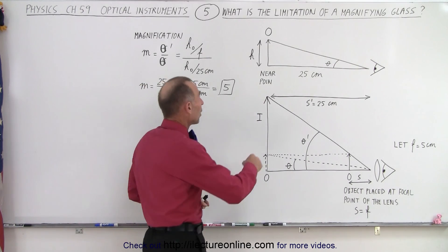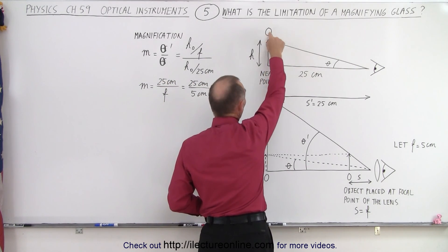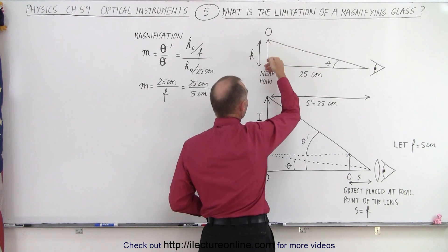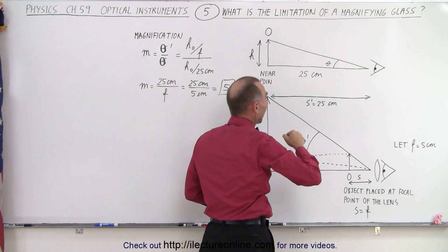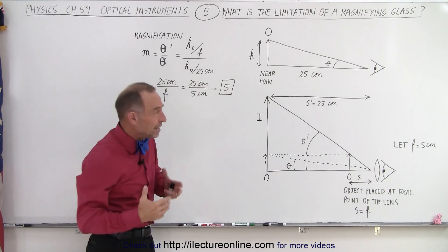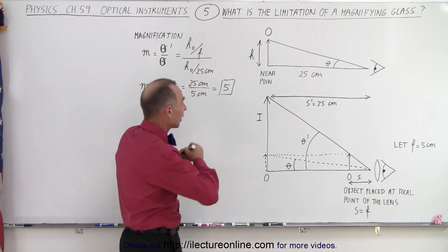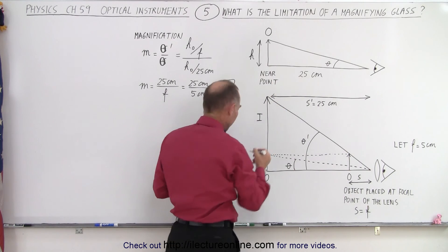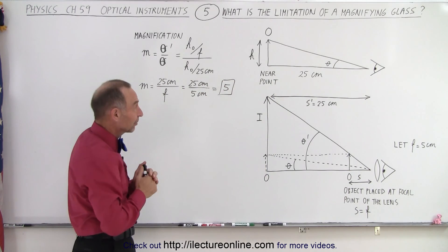First of all, imagine that we want to see a very small object. So O is used for object. The arrow here is the height of the object. And we have to place it about 25 centimeters away, which is the near point for most people's eyes.